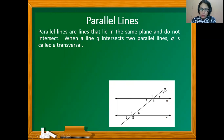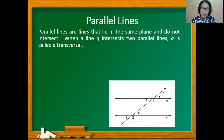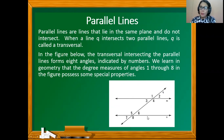Take note that line Q intersects the two parallel lines. With that, there will be degree measures of angles 1 through 8 that form pairs of angle relationships.